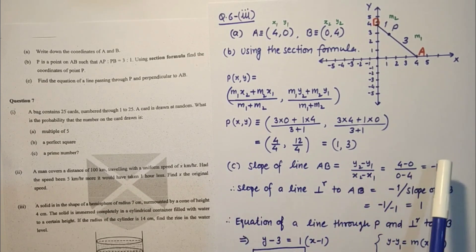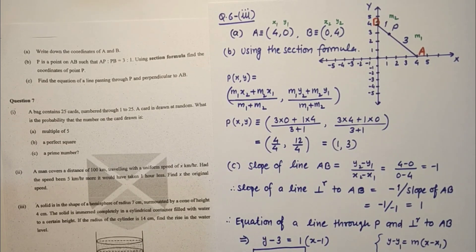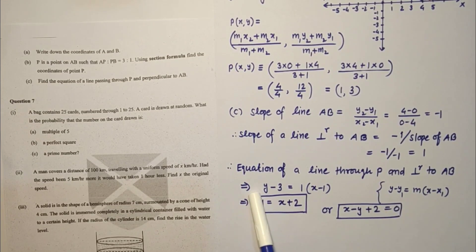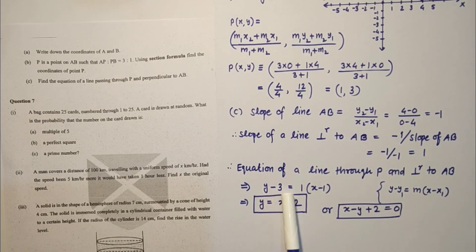Slope of line AB we found using this formula, that is minus 1. So required line slope which is perpendicular to AB is minus 1 upon minus 1 which is 1. Then equation of line through P and perpendicular to AB is Y minus Y1 equals M(X minus X1), so Y minus 3 equals X minus 1, Y equals X plus 2, or X minus Y plus 2 equals 0. This is the answer.